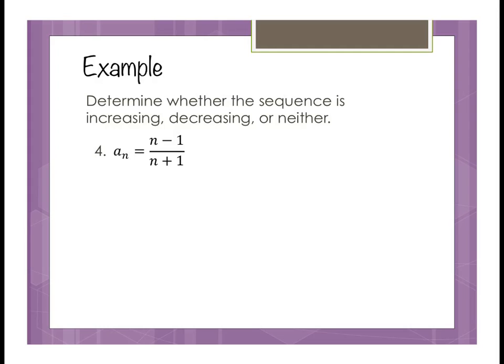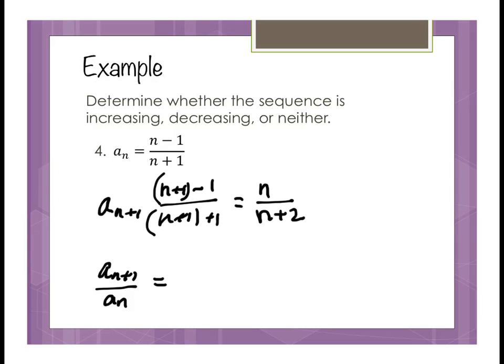Alright, so what we're going to do on this one is we're going to look at showing whether the function is increasing or decreasing. And in order to do that, we're going to find a_{n+1}. And that means we're going to plug in n+1 in place of all the n's. Like so. This is actually going to give me n on top and n+2 on bottom. Next thing we're going to do is we're going to write a_{n+1} over aₙ. And you'll see why we're going to do that here in a minute as the problem continues.